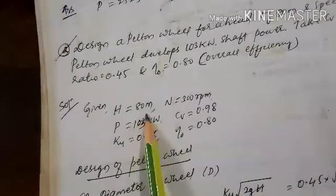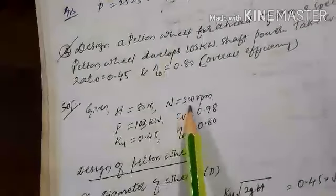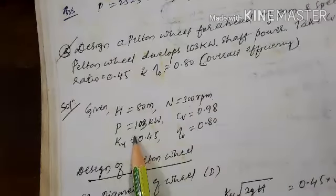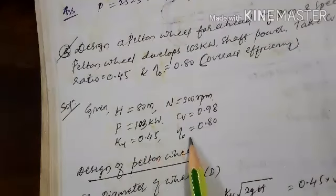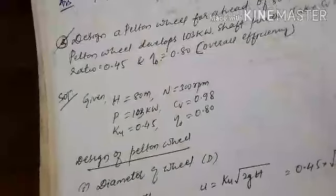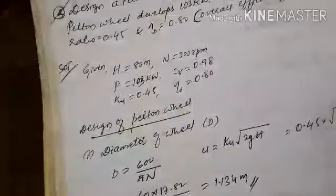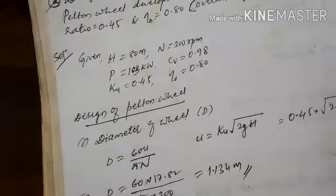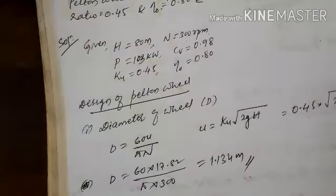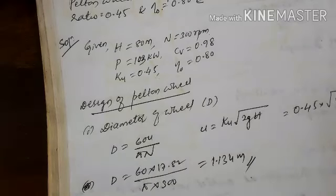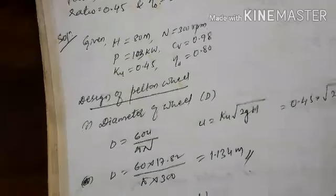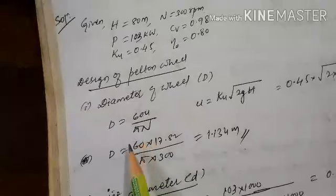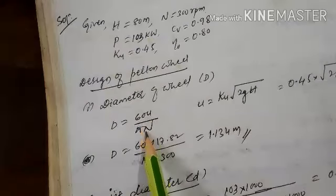Given data: H = 80 meter, N = 300 rpm, P = 103 kilowatt, Cv = 0.98, Ku = 0.45, overall efficiency = 80%. Design of Pelton wheel means calculating: wheel diameter, jet diameter, number of buckets, and bucket dimensions. Wheel diameter D = 60u / (π·N), where u = Ku × √(2gH). Calculating u and substituting gives u = 17.82 meter per second, D = 1.134 meter or 1134 millimeter.